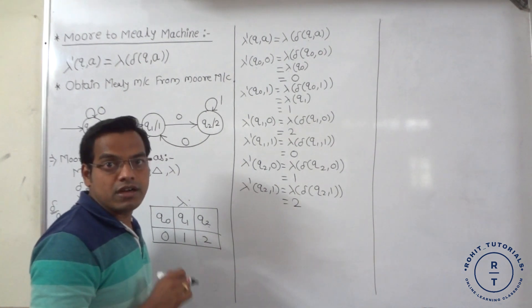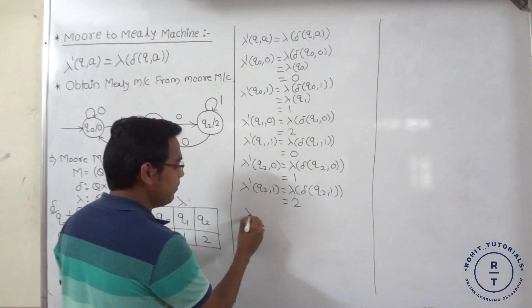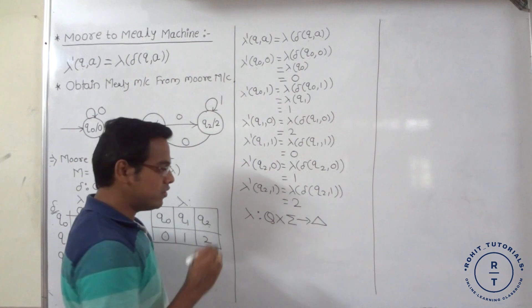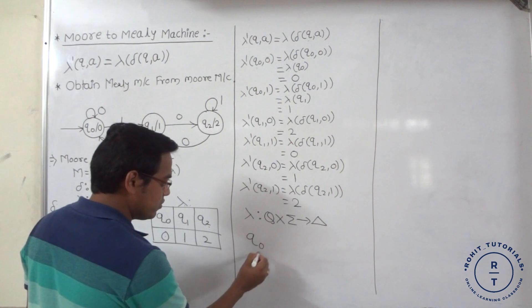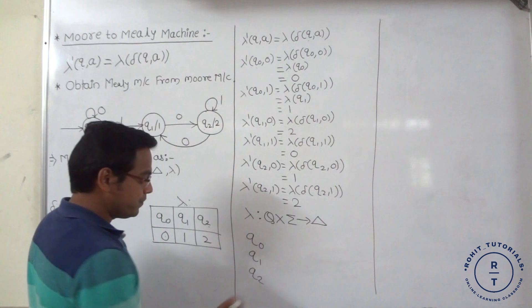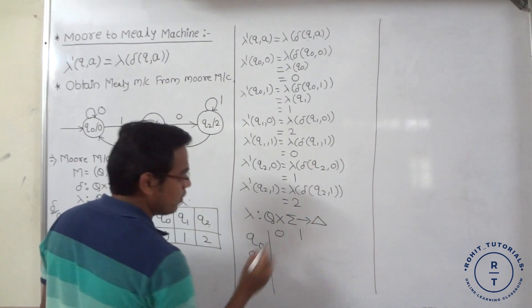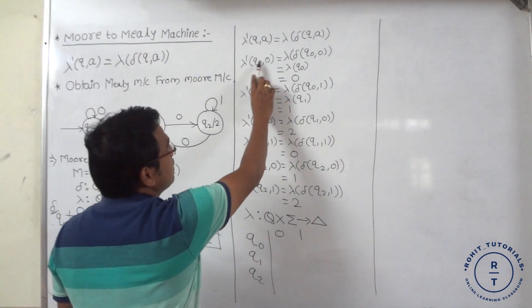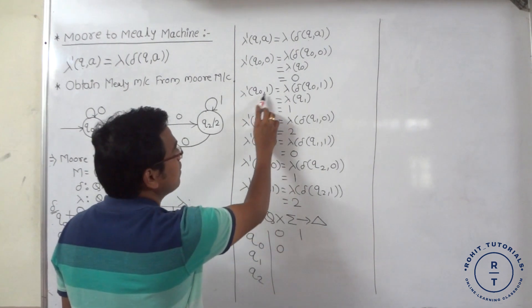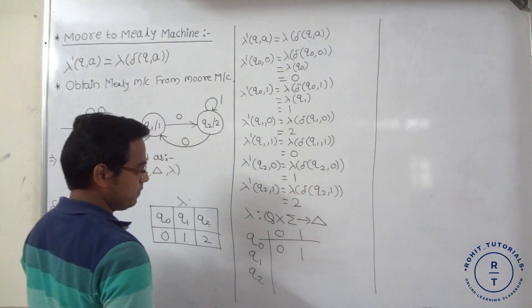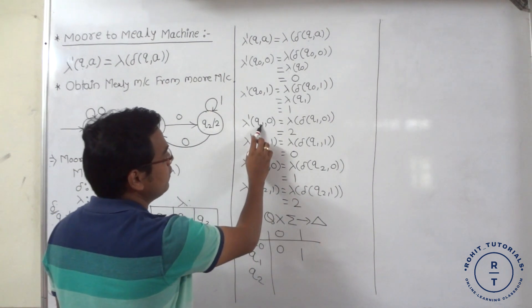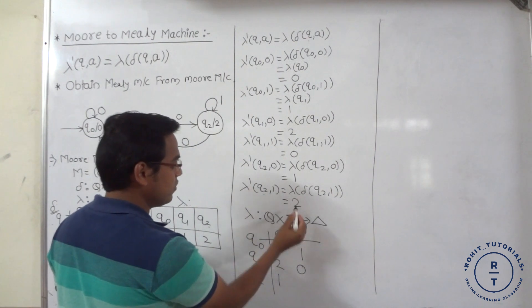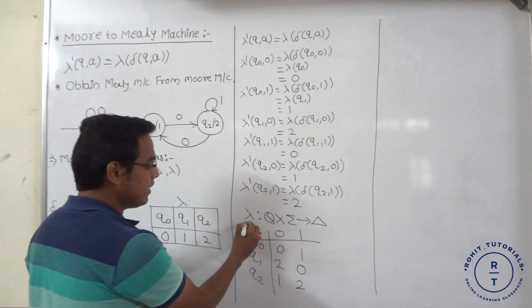Now the new machine function or output function. In Mealy machine, lambda is represented as: whenever at any state any input symbol occurs, it gives the output. With inputs 0 and 1, the newly generated output function is: q0 with input 0 → output 0; q0 with input 1 → output 1; q1 with input 0 → output 2; q1 with input 1 → output 0; q2 with input 0 → output 1; q2 with input 1 → output 2. This is the newly generated machine function or output function.